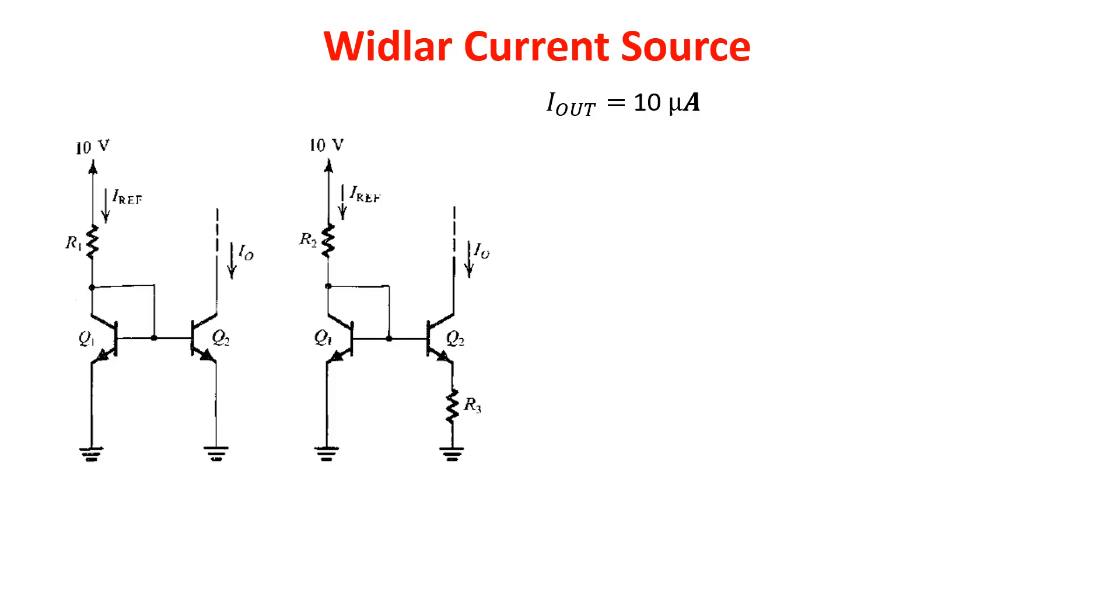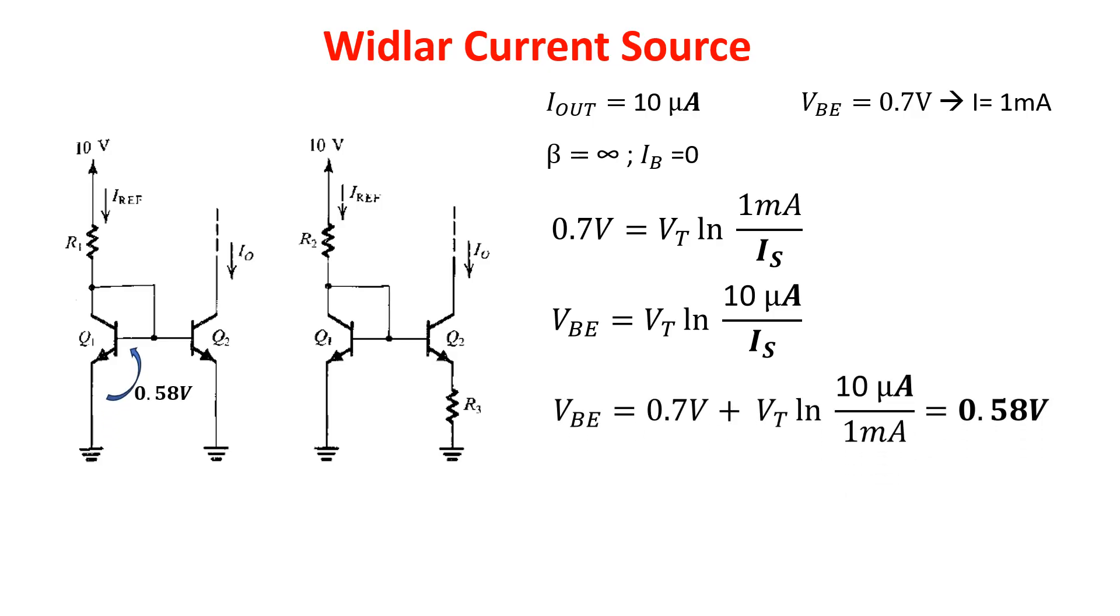Assuming VBE equals 0.7V at a current of 1 milliamp and neglecting the beta, we can say that 0.7V is equal to this, but we want to find the VBE for 10 microamps because in the classical current mirror, if Q1 and Q2 are matched, the current in the two branches are equal. Making the difference of these two equations, we get that VBE for 10 microamps is equal to 0.58V and in this case VBE1 is equal to VBE2.